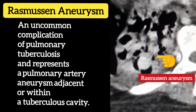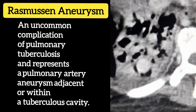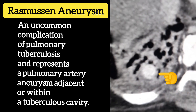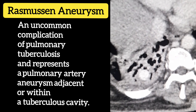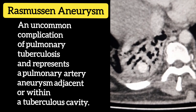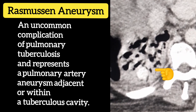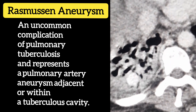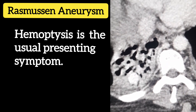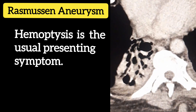Rasmussen aneurysm is an uncommon complication of pulmonary tuberculosis and represents a pulmonary artery aneurysm adjacent or within a tuberculous cavity. Hemoptysis is the usual presenting symptom.